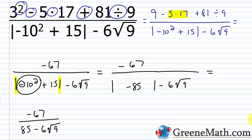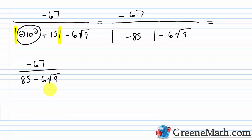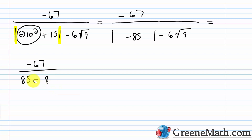In the denominator I now have subtraction, multiplication, and a square root. Square root of 9 has the highest priority — the square root of 9 is 3 — so we have 6 times 3. Multiplication is next: 6 times 3 is 18. So we end up with 85 minus 18, which is 67. This gives us negative 67 over 67, or negative 67 divided by 67, which equals negative 1 — the 67s cancel, leaving just negative 1.